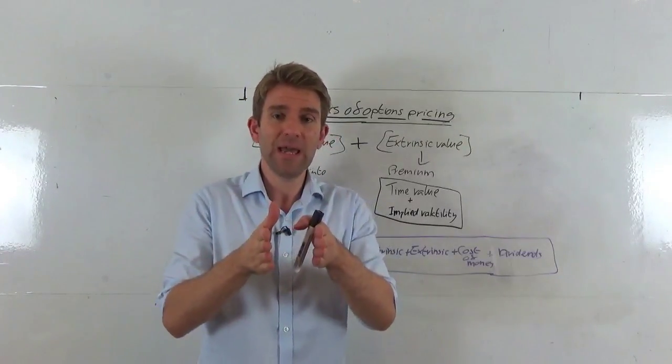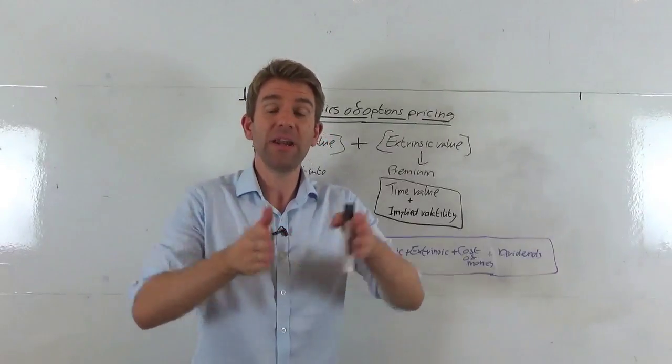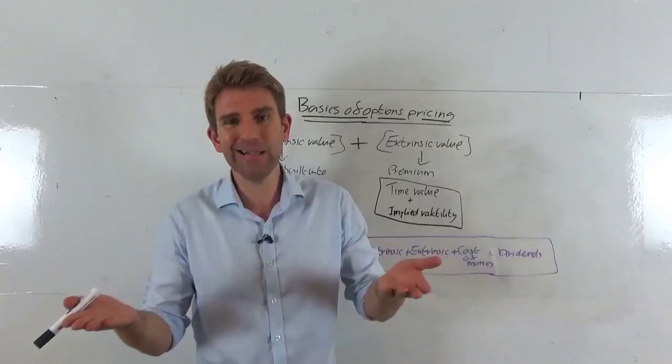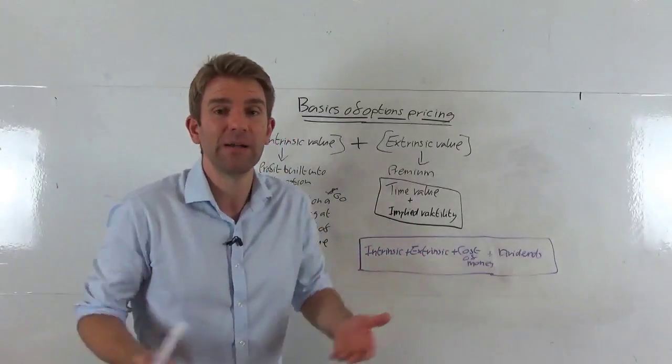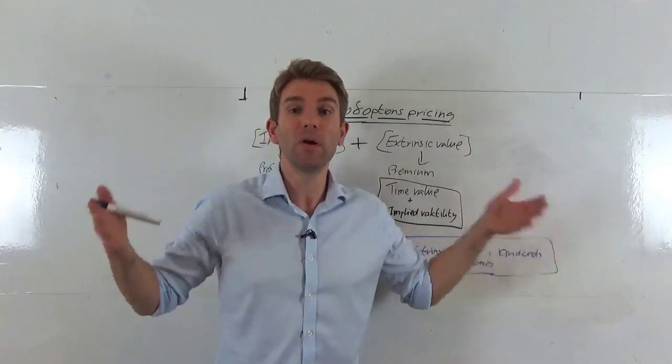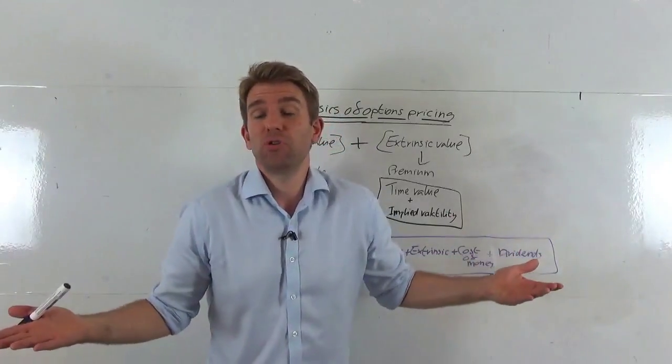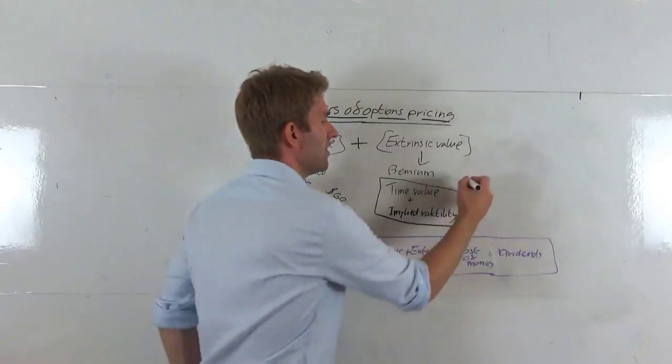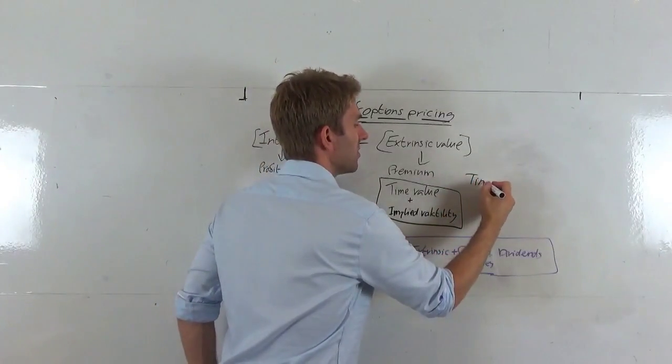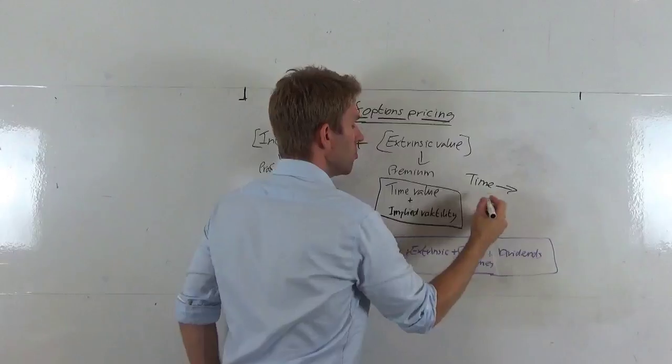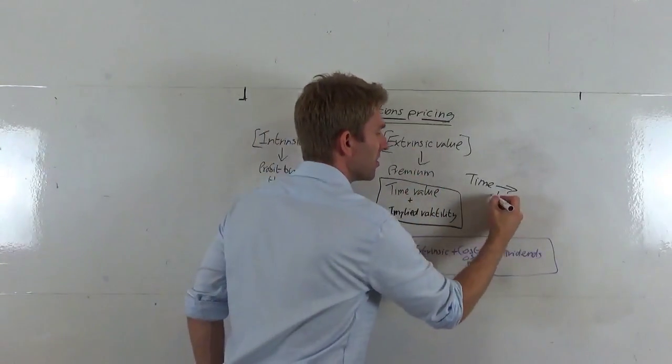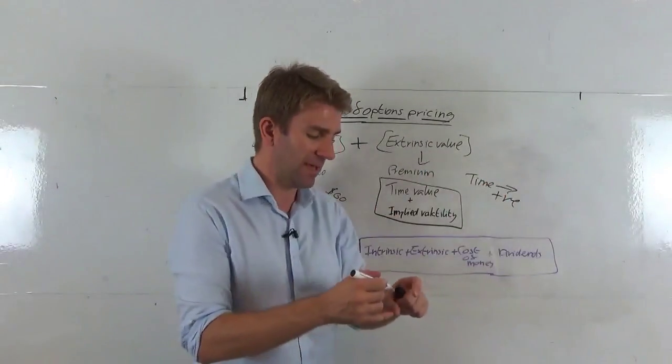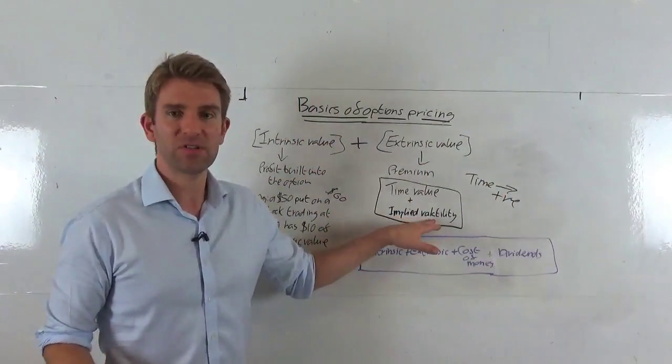If you said, 'I think the stock's going to double in a week,' that's not very likely. It's not going to be pretty cheap that. If you're saying, 'I think it's going to double over five years,' it could do, it might be a 50/50 shot. All of a sudden, that's going to come increasing value. So as time goes up, as time increases, so does the price. So does the extrinsic value that also increases as well. As time increases, extrinsic value increases.